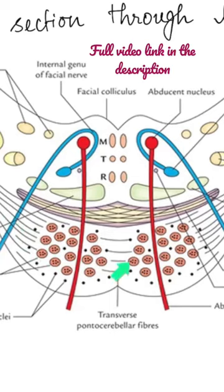Let's look at the features of the basilar part. This part is composed of longitudinal bundles of fibers, transverse fibers, and the pontine nuclei.